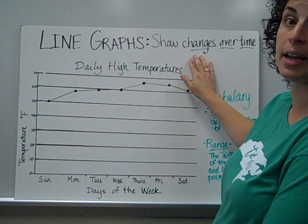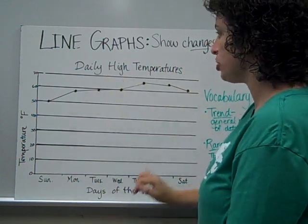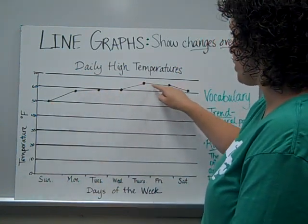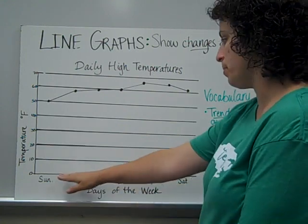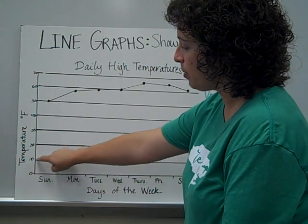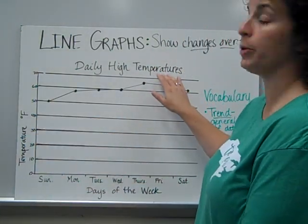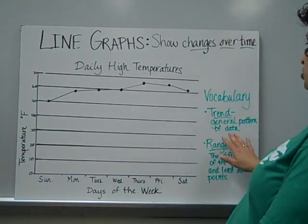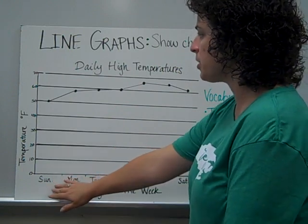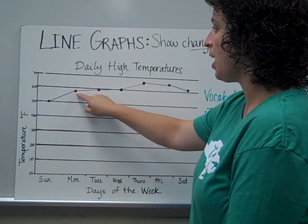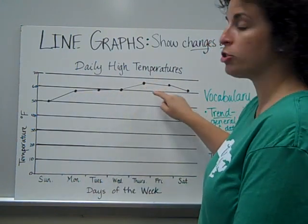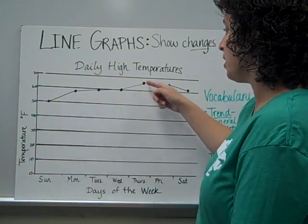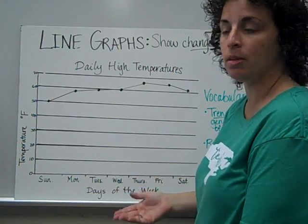Line graphs show changes in the data over time. Here I have a graph of some daily high temperatures. By following the line, we can see that from Sunday to Monday the high was higher than the day before. We can follow this line all the way across and see the temperatures for each of the days on my x-axis, which tells me these are days of the week. The y-axis tells me the temperature was measured in degrees Fahrenheit. I can see a trend — a general pattern of what's happening in the data. Starting on Monday, the temperature got higher and higher until Thursday, then started to cool off. So the trend was the temperature was rising until Thursday, then started to cool down on Friday and Saturday.